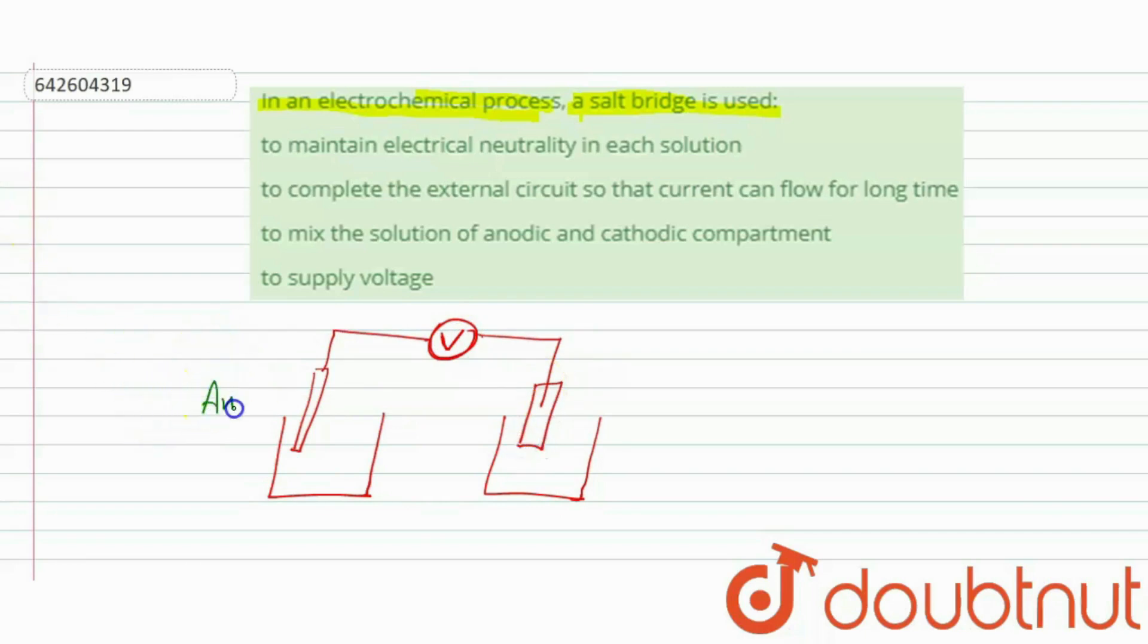And in this beaker I have another electrode and it is our anode. It is our anode on which what happens? Oxidation, with negative.